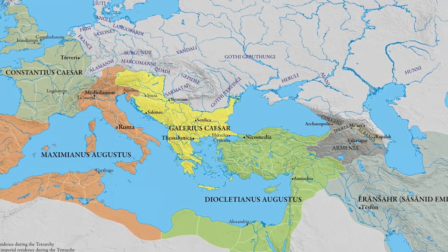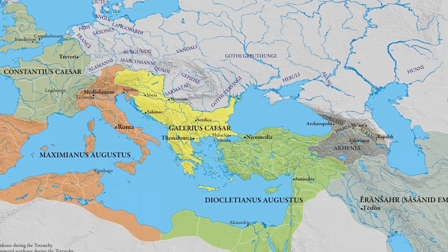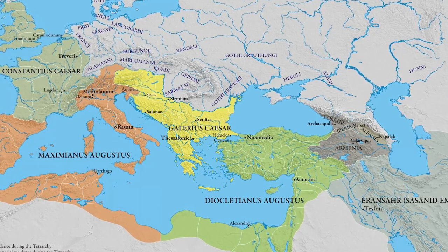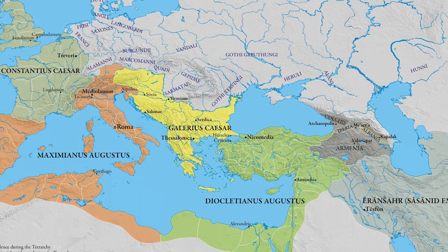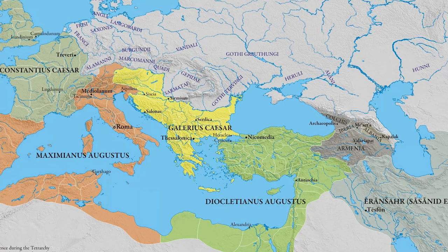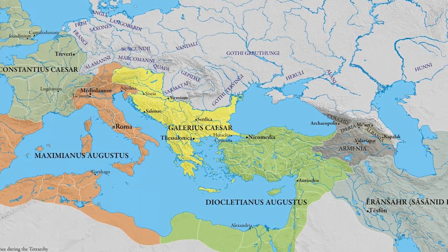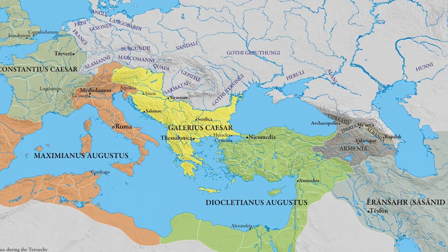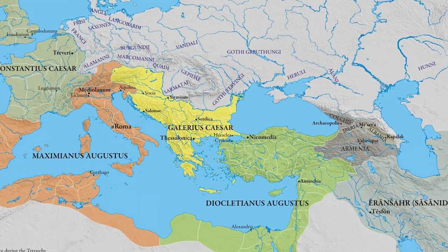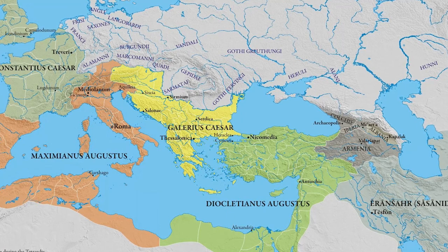Diocletian established administrative capitals for each of the Tetrarchs, located closer to the empire's borders. Though Rome retained its unique prefect of the city, it was no longer the administrative capital. When in 305 the 20-year term of Diocletian and Maximian ended, both abdicated — their Caesars, Galerius and Constantius, were raised to the rank of Augustus, and two new Caesars were appointed: Maximinus and Flavius Valerius Severus. These four formed the second Tetrarchy.